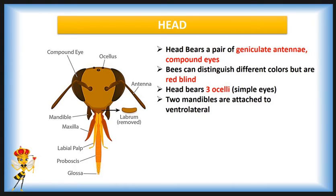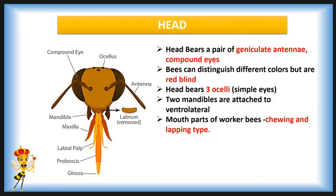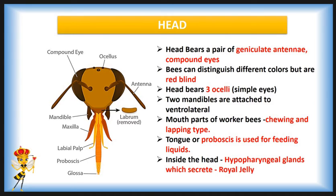Workers use mandibles for grasping and scraping pollen from anthers, feeding on pollen, and in manipulation of wax scales during comb building. Mouthparts of the worker bee are modified for chewing and lapping type. The tongue or proboscis is used for feeding liquid food. Inside the head there are long coiled strings of small lobes called the hypopharyngeal gland, which secretes glandular food known as royal jelly, fed to the queen and young larvae.